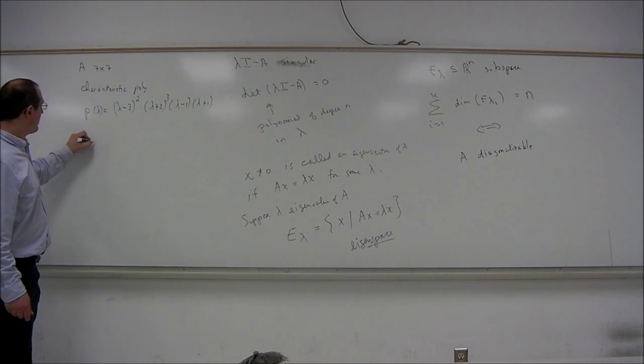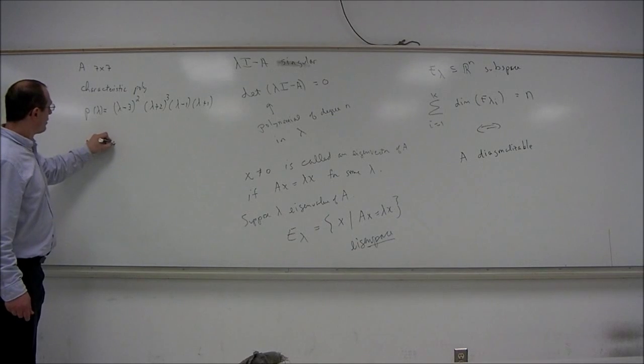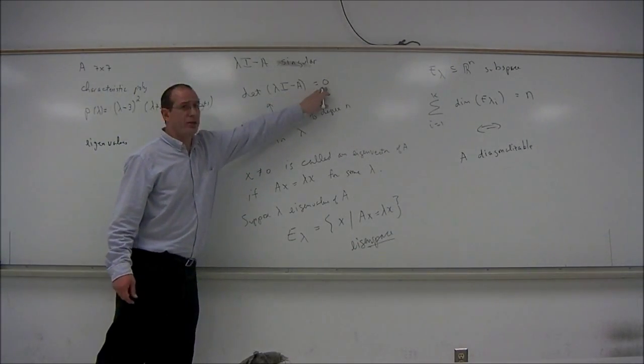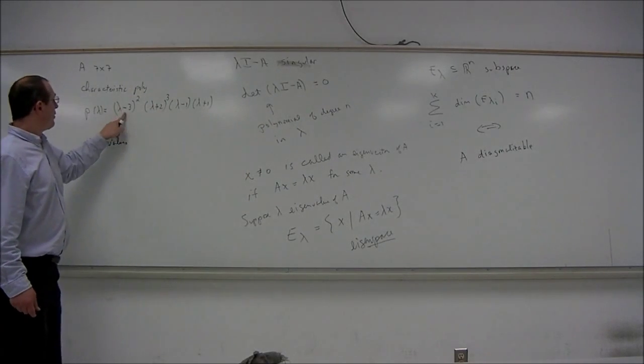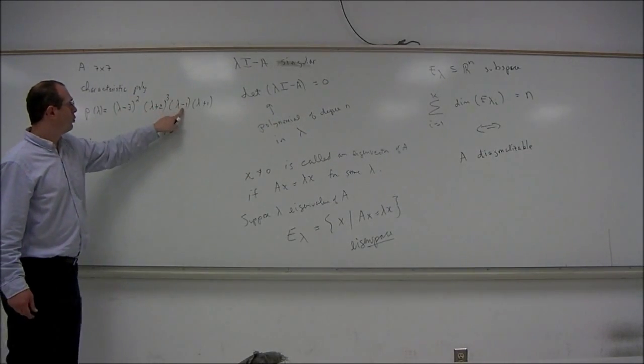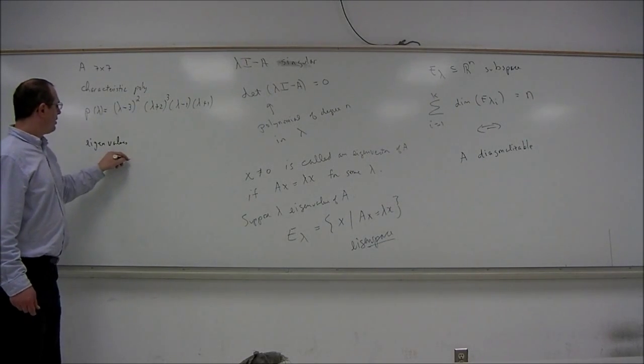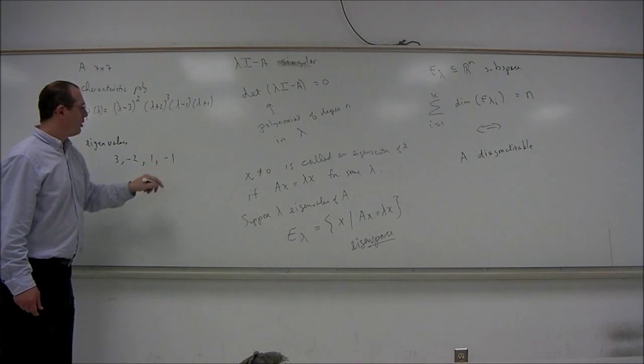Then that means that the eigenvalues are, set the polynomial equal to 0, 3, negative 2, 1, and negative 1. The eigenvalues are 3, negative 2, 1, and negative 1.